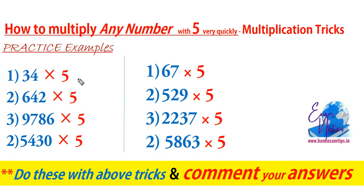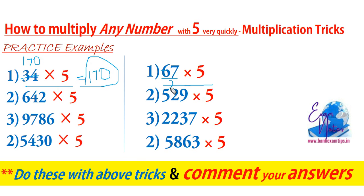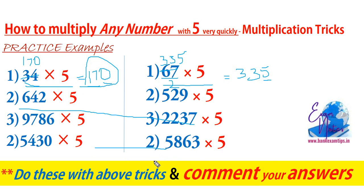I have given a few more examples — practice these and comment your answers. For even numbers: take half of the given number and put 0 at the end. For odd numbers: make it half and put 5 at the end. Do these examples by applying the shortcut trick and comment your answers.